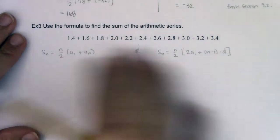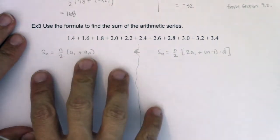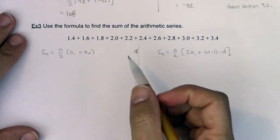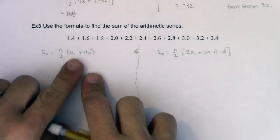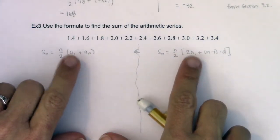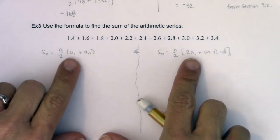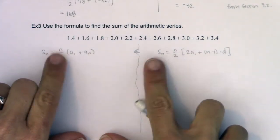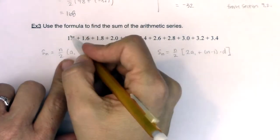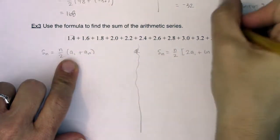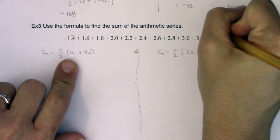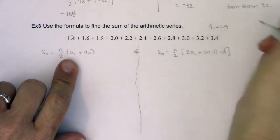Before I get going on either formula, it's good to take a look at what I know — especially what they have in common. We need to know a_sub_1 and we need to know the n value. A_sub_1 is the easiest one: the first term in the sequence. A_sub_1 is equal to 1.4.